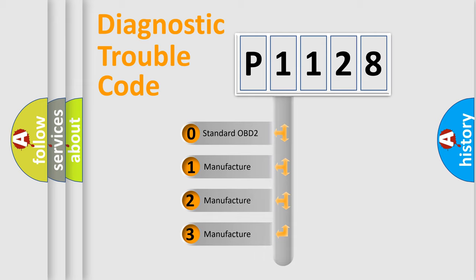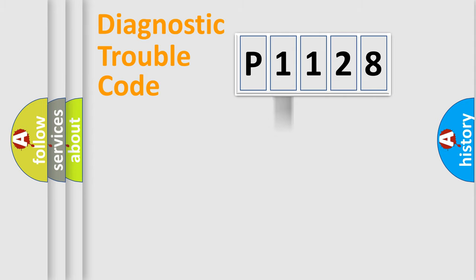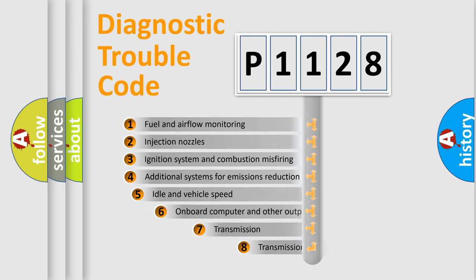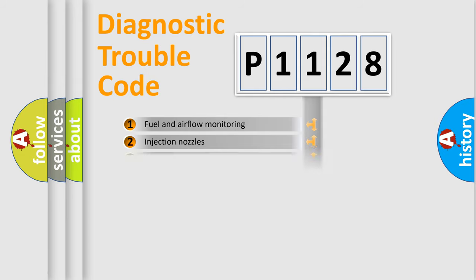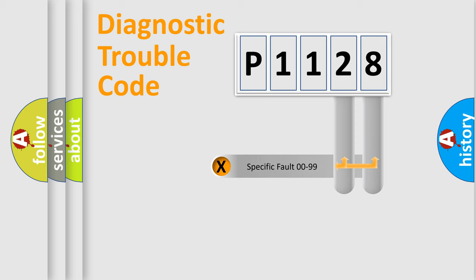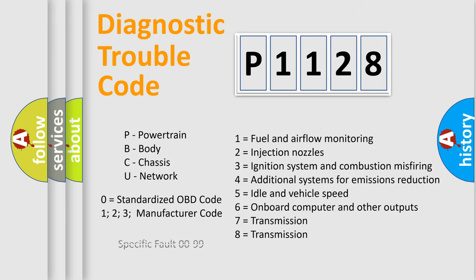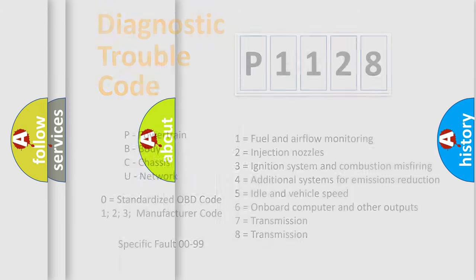If the second character is expressed as zero, it is a standardized error. In the case of numbers 1, 2, 3, it is a more manufacturer-specific expression of the car-specific error. The third character specifies a subset of errors. The distribution shown is valid only for the standardized DTC code. Only the last two characters define the specific fault of the group. Let's not forget that such a division is valid only if the other character code is expressed by the number zero.